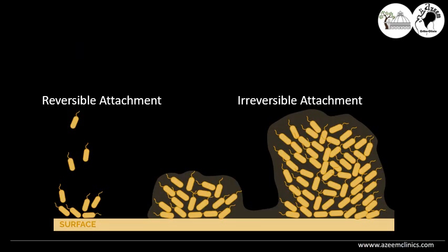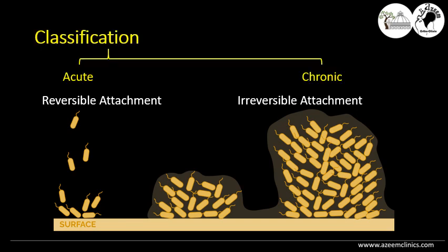Starting with the classification, it is based on the bacterial attachment status to the surface, dividing it into either acute or chronic periprosthetic infection. In the acute case, the bacteria can be reversibly and easily detached from the surface, and this occurs in the first three to four weeks of bacterial attachment. However, after three to four weeks, the bacteria are permanently adherent to the surface with biofilm, resulting in a chronic periprosthetic infection, because detachment of the bacteria from the surface is almost impossible.